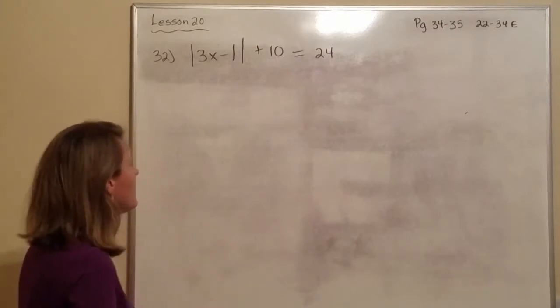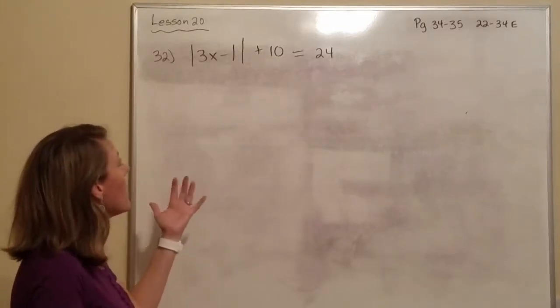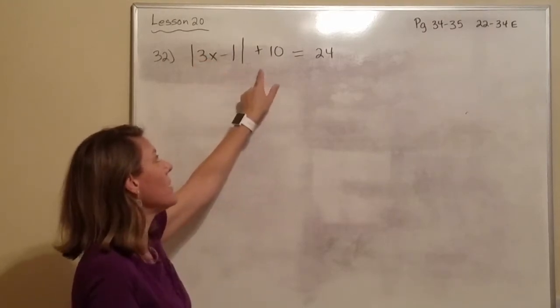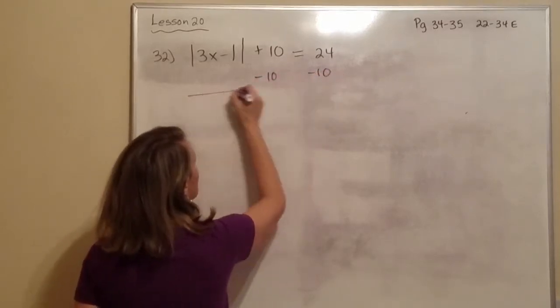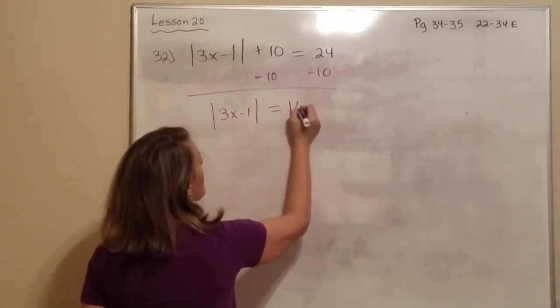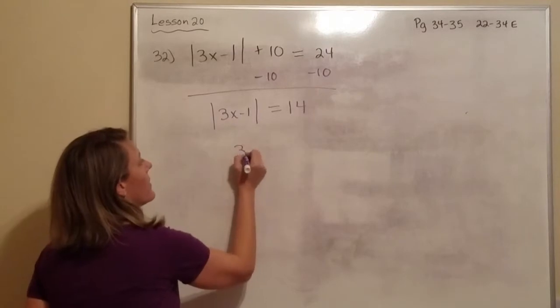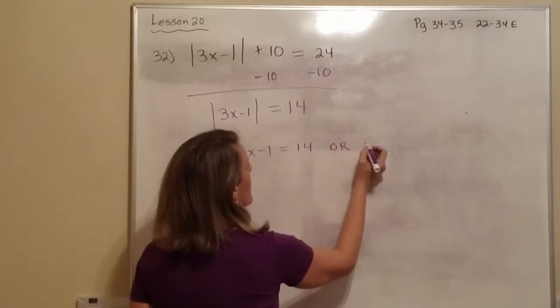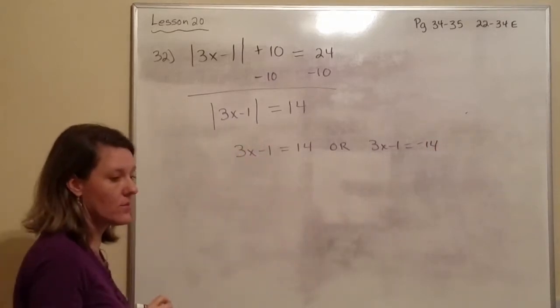Number 32. These signs right here are absolute value. So we're going to get that all by itself, and then take it out. So I'm going to subtract 10, sorry. So that would be 14. Now that it's all by itself, we can just pull this out. We separate it.